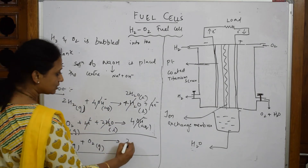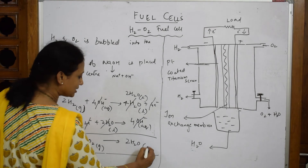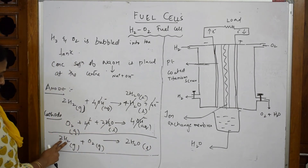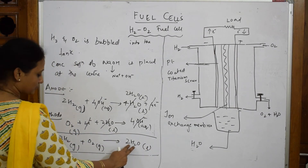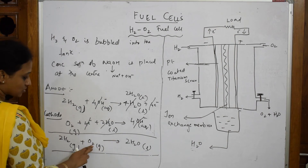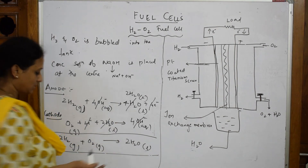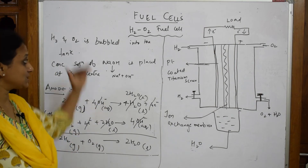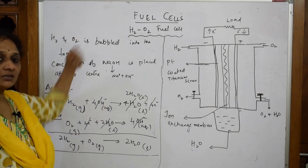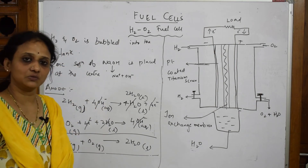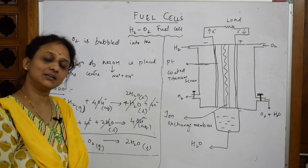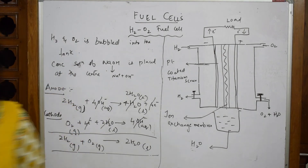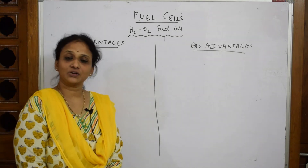The two water molecules on the left and four water molecules combined leave two water molecules on the right. The overall reaction is: 2H₂(g) + O₂(g) → 2H₂O(l). Checking the balance — four hydrogens on each side, two oxygens on each side — it is balanced. This is the overall reaction of the fuel cell.